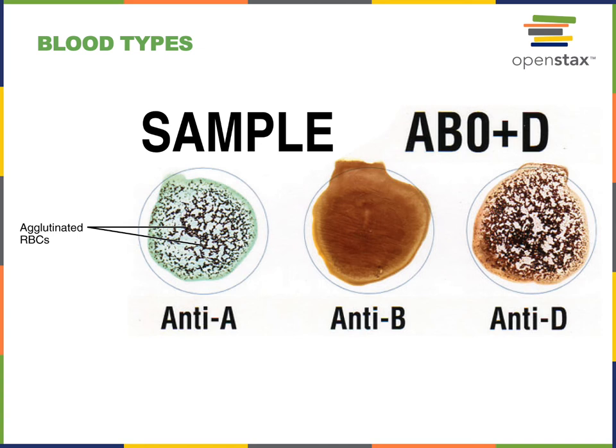Therefore, the blood sample typed on this card is A positive — meaning type A blood from the ABO group and positive from the RH blood group. We can use the ABO blood group and the RH blood group together; this sample would be A positive. If there was no agglutination in any of the wells, we would say the blood type is O negative, whereas if there was agglutination in all three wells, the blood type would be AB positive.